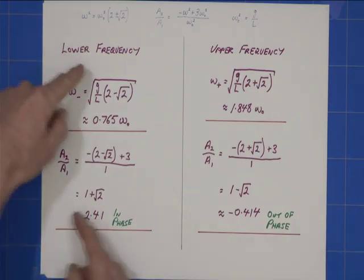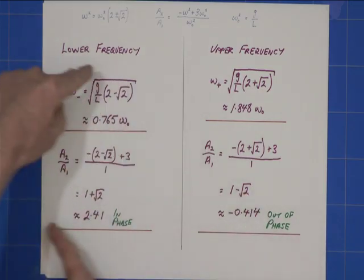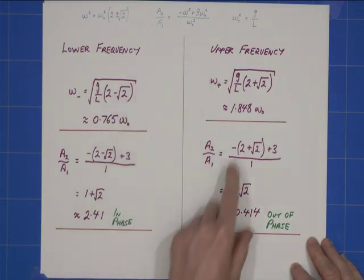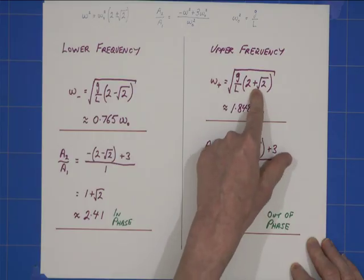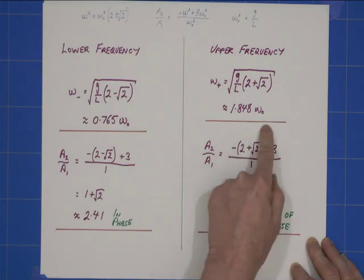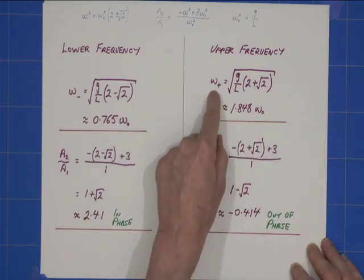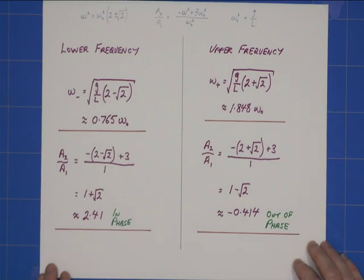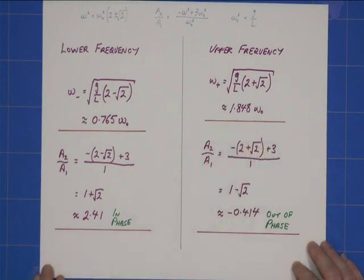So, the two are doing that, the two masses are doing that. Same thing for the upper frequency, but this time I'm taking the plus rather than the minus. I get this value here, so you can see that the upper frequency, the upper normal mode, is getting on for double that of a single pendulum.